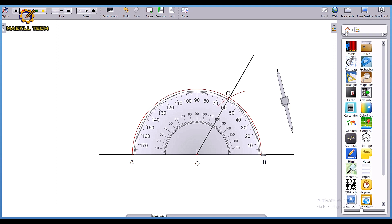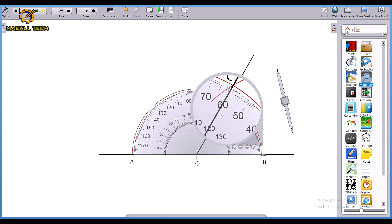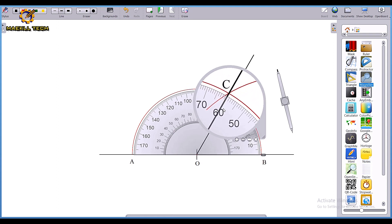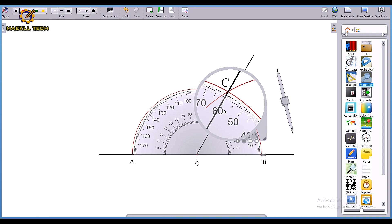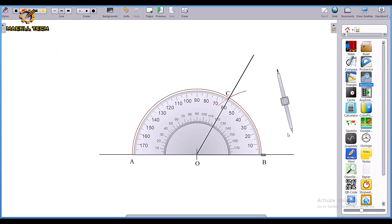Quite easy as ABC. That is 60 degrees. You can see if I say it is 60 degrees, it is 60 degrees.